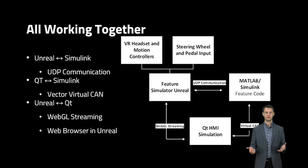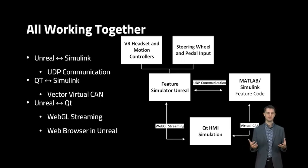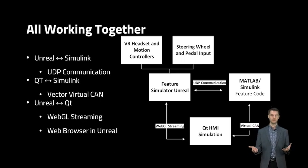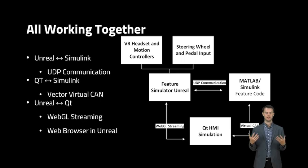So why these three tools? Unreal brought 3D visualization and a physics engine to the package. Qt integrated high-quality HMI, and I was able to use existing HMI simulations that we had already created. MATLAB and Simulink housed all of our feature code and production control models. The key challenge was integrating all three together so that they could communicate and work together.